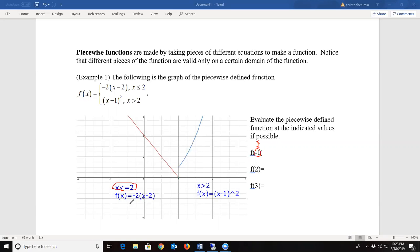My function rule is f of x is equal to negative 2 times the quantity x minus 2. I plug in negative 1 for my x in this function here. Let's do that.